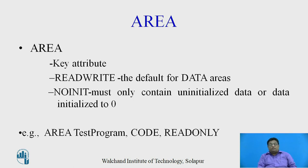The READ-WRITE attribute is used for data areas to give read-write access to that memory. The NOINIT attribute means the area must only contain uninitialized data or data initialized to zero. An example of the AREA directive is: AREA test_program, CODE, READONLY. This means the reference name is "test program", space will be assigned for instructions, and this space is read-only memory.